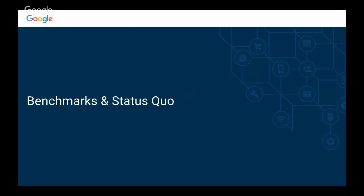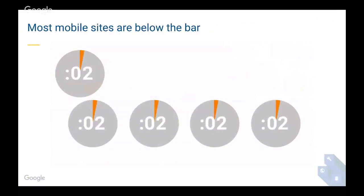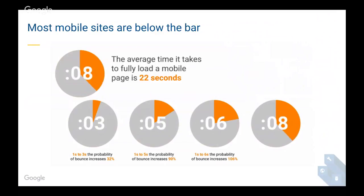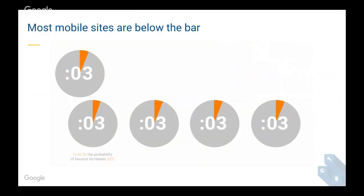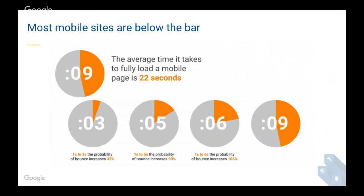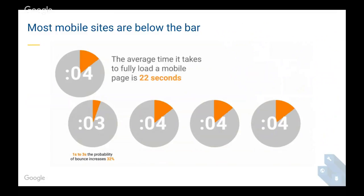A main question from customers is: where should we optimize towards? Looking at the status quo, we analyzed a lot of sites and found that sites take around 22 seconds on average to fully load. Keep in mind this is fully load time, which is higher than other speed metrics we usually use. It is quite high, and as you can see from the graph, every additional second will significantly increase your bounce rate.